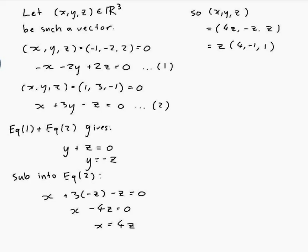So what that means is that for any value of z that's a vector that's perpendicular to both minus 1, minus 2, 2 and 1, 3, minus 1.